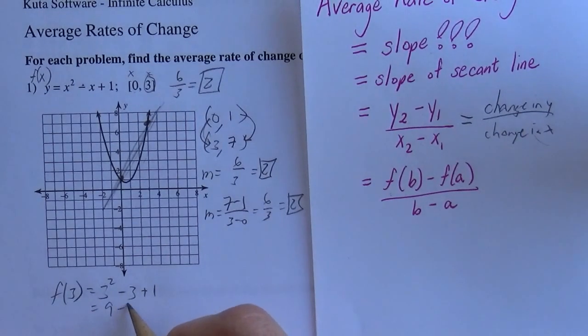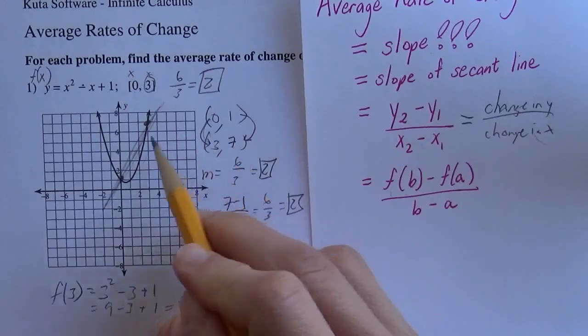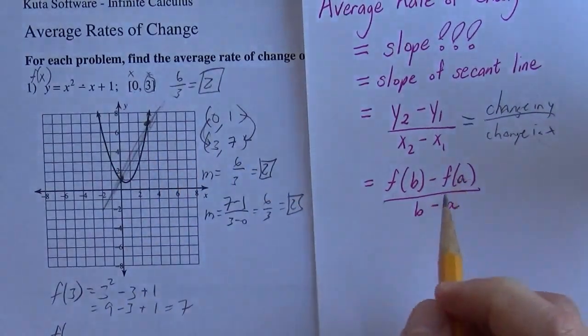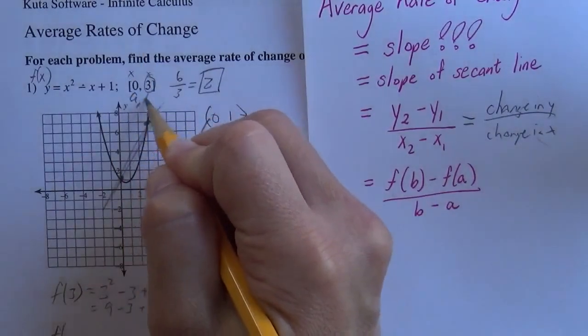is 9 minus 3 plus 1 is 7, just like we knew it was from looking at the graph. And then f of a, this is a and b here, I should have mentioned that.